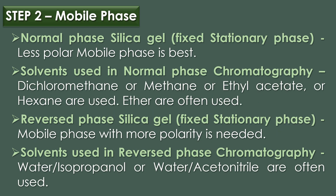The second step is the mobile phase, which is an important part that helps separate mixtures based on how polar they are. When normal phase silica gel is used as the stationary phase, a less polar mobile phase is best. In normal phase chromatography, solvents like dichloromethane and methanol, hexane and ethyl acetate, or hexane with ethers are often used.